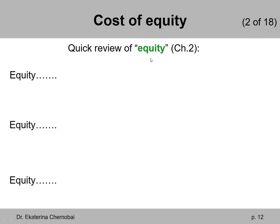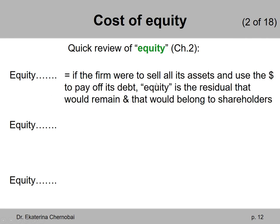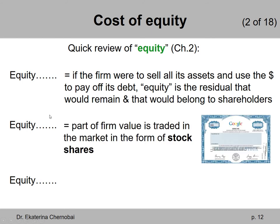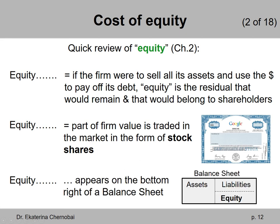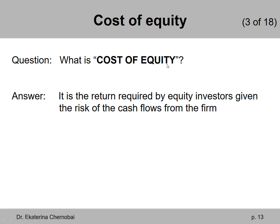From chapter two, equity means if the firm were to sell all of its assets and use the sale proceeds to pay off all of its debts and liabilities, then equity would be the residual that would remain — and that would belong to the owners of the firm or the shareholders. Equity is also part of firm value that's traded in the market in the form of stock shares, and it's also the bottom right of a balance sheet. So what is cost of equity? It's the return required by equity investors given the risk of the cash flows from the firm.